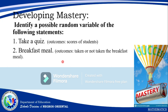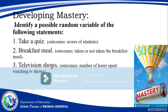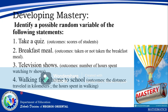Identify the possible random variable for each statement. For 'take a quiz,' the outcomes would be scores of the students — that is discrete. For 'breakfast meal,' the outcomes are taken or not taken — discrete. For 'television shows,' the outcomes are the number of hours spent watching TV. For 'walking from home to school,' the outcomes are distance traveled in kilometers or hours spent walking — this is continuous, as is number three.